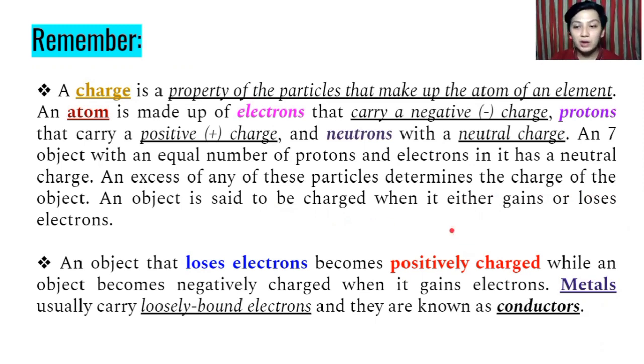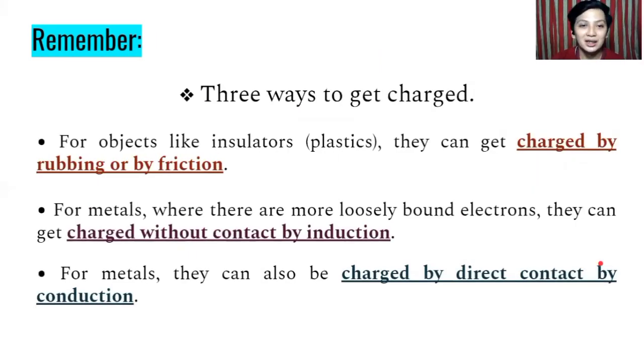For example, metals usually carry loosely bound electrons. So they are known as conductors. That's why metals are easy conductors of electricity because they carry loosely bound electrons. It can easily be transferred. That's why metals are good conductors of electricity. For objects like insulators, they are the ones that cannot conduct electricity. So meaning to say these are the stoppers of electricity. So for example, plastics, wood, rubber, and many more insulators that we use usually in cooking wares, electrical wires, and many more in household materials and appliances.